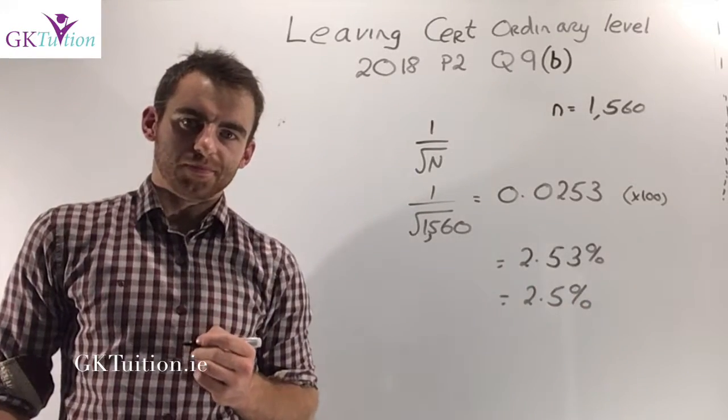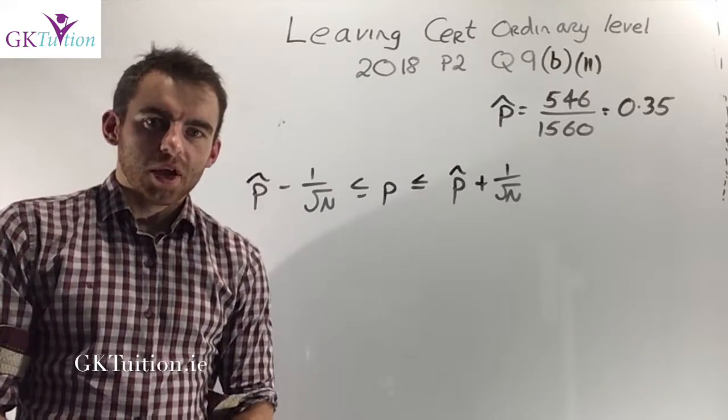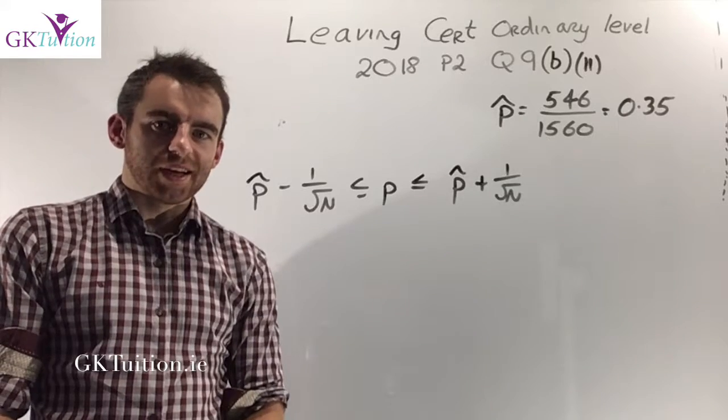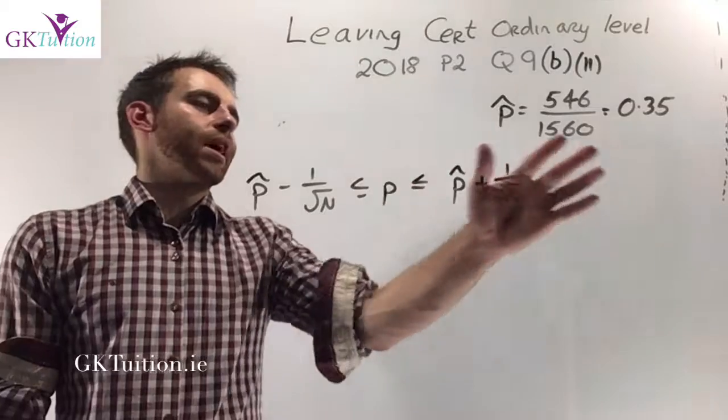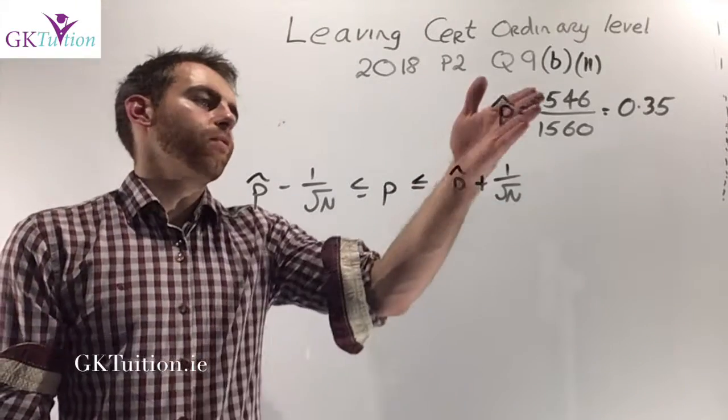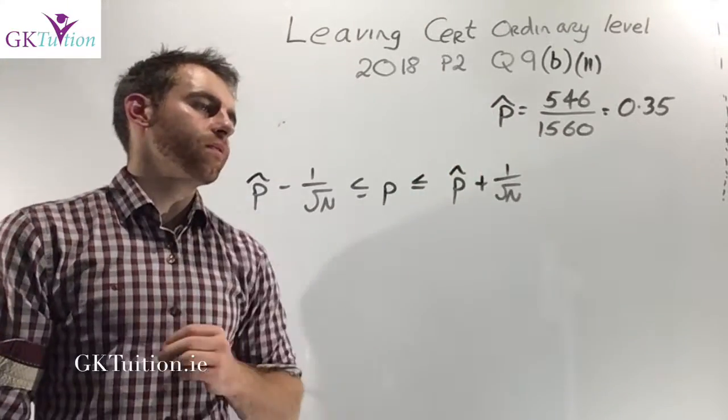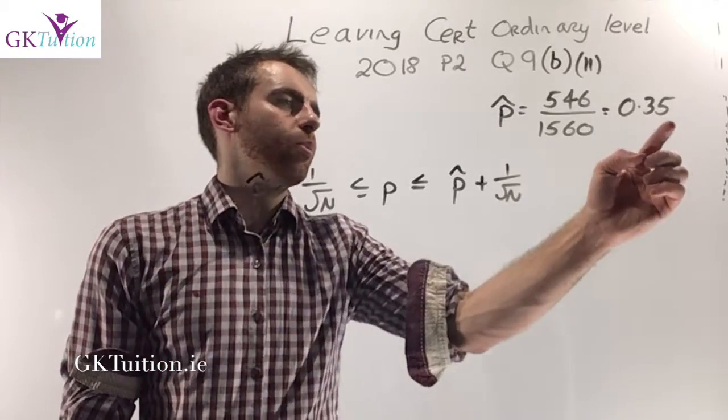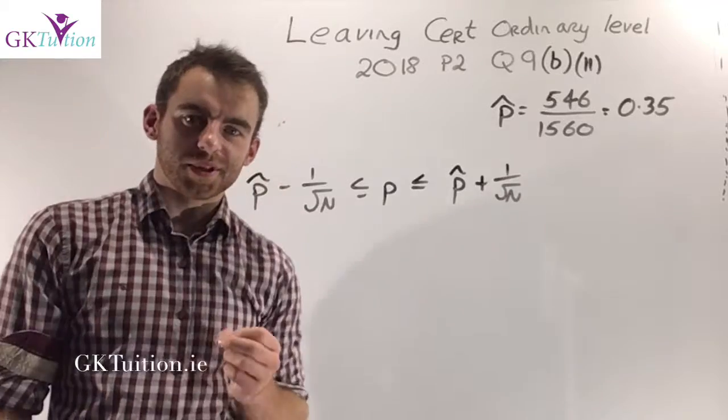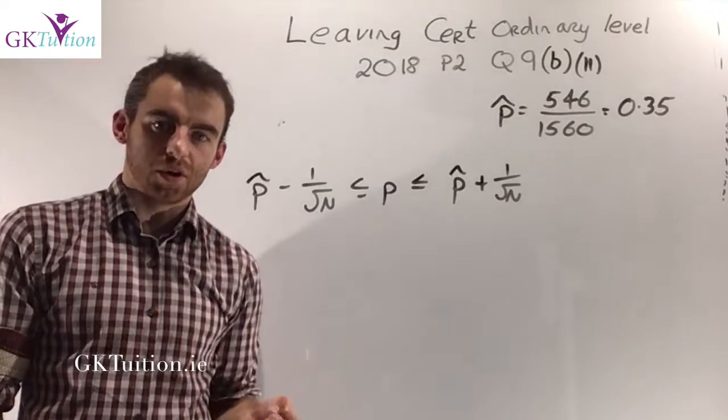In part B.2 of this question we're told that 546 of the people surveyed enjoyed the show. So the first thing you should do is get this as a proportion. 546 of the 1,560 people who were surveyed enjoyed the show. In other words, 0.35 or 35% of the people surveyed enjoyed the show.